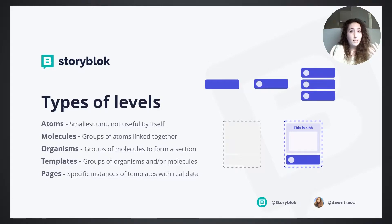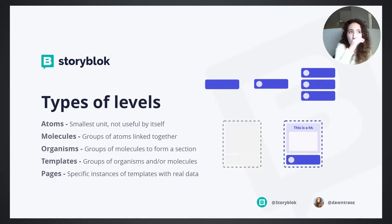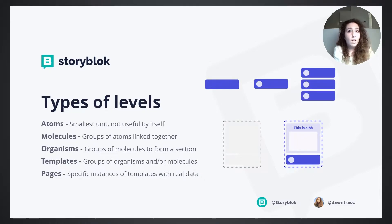Think of atomic design as levels. We have atoms — the smallest unit in your application, not useful by itself, like an input or a label alone. The molecule is a group of atoms, so you combine the label and the input to create a field. After that you have the organism, which is a group of molecules — for example, a form with more than one field.